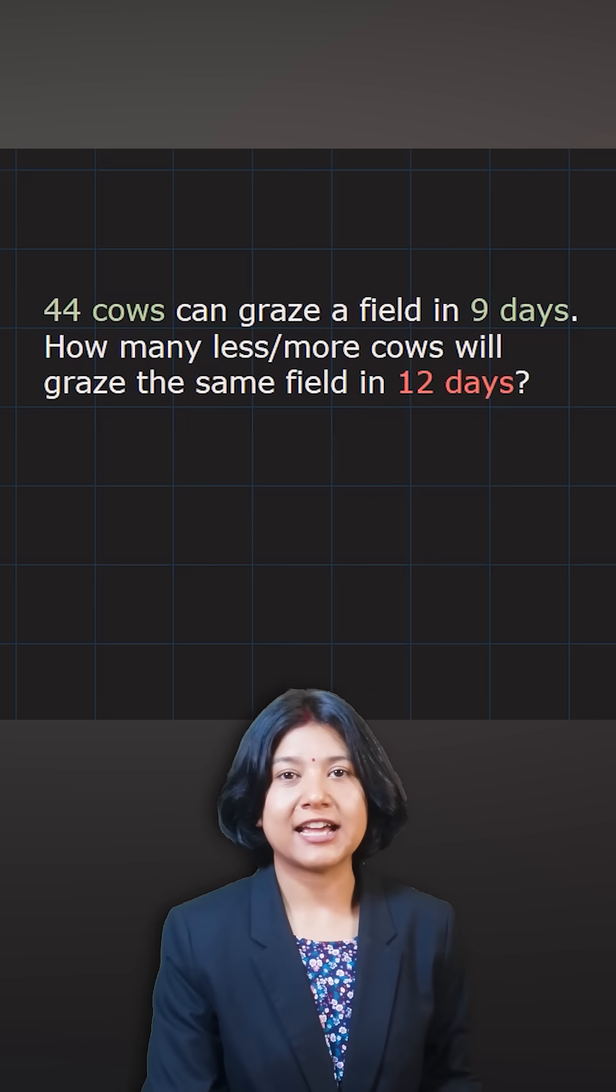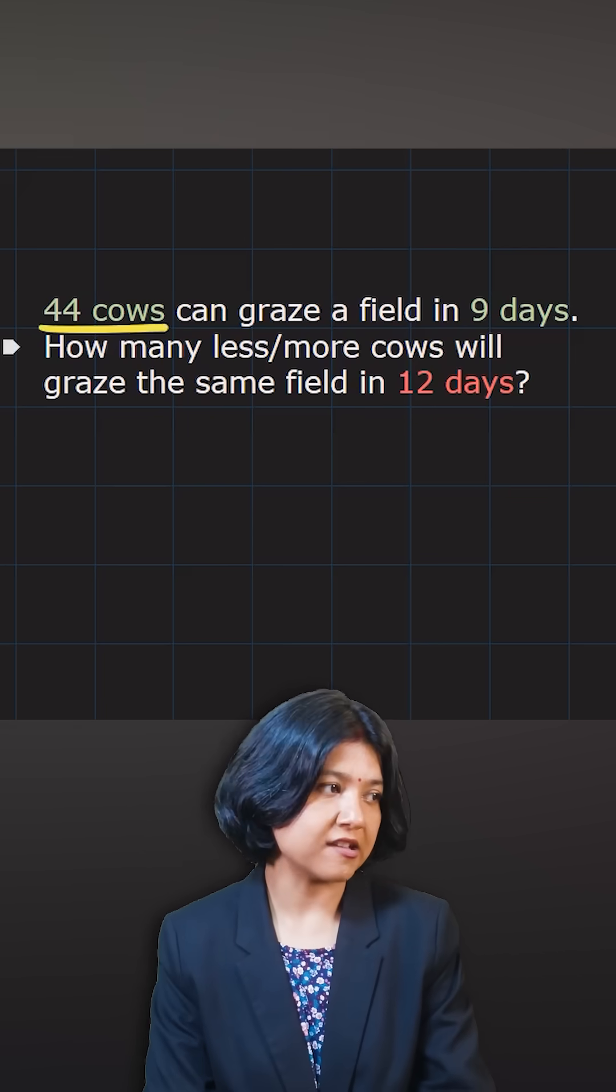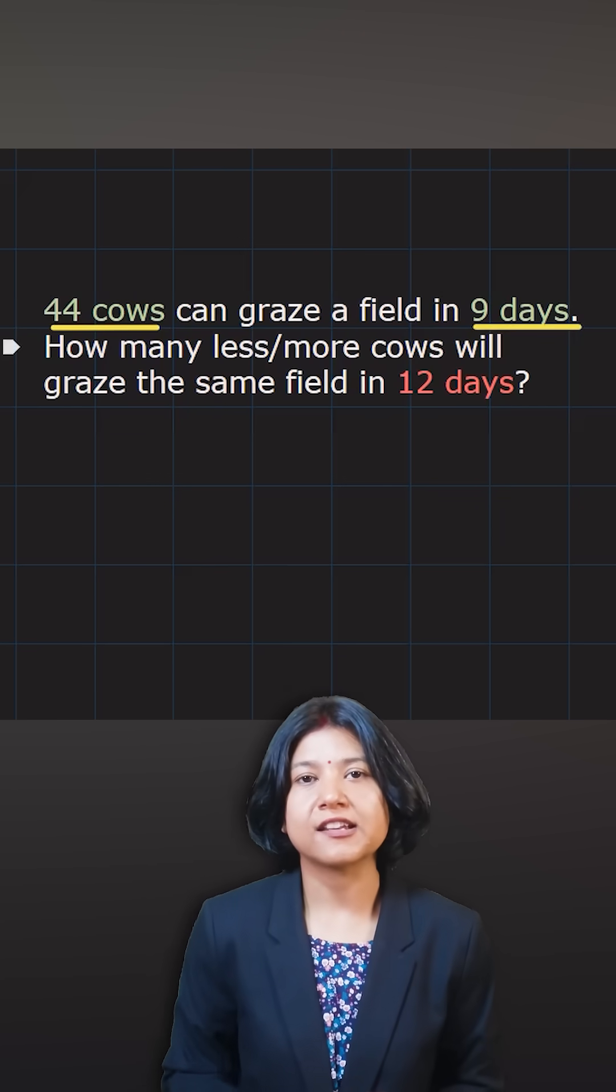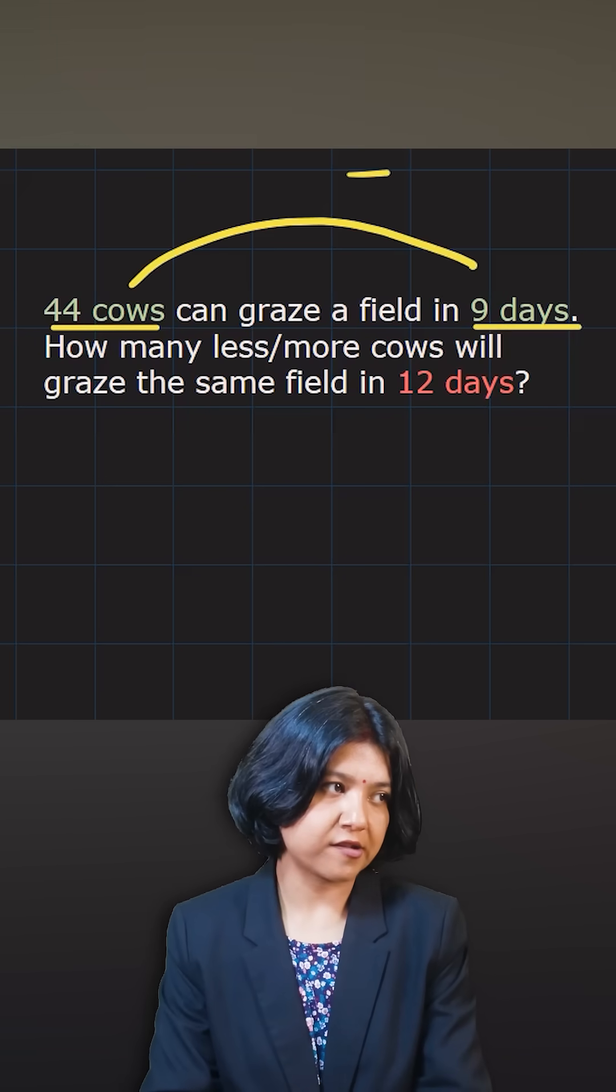44 cows can graze a field in nine days. Remember the relation between number of cows and number of days. More cows means the food will last for fewer days. So the relation here is inverse.